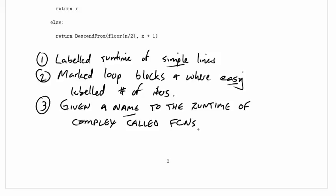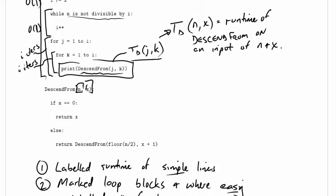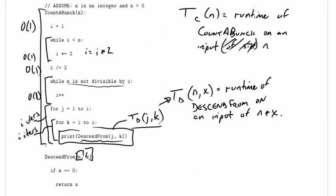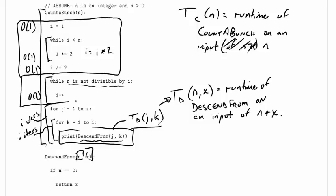And actually, in essence, if I can jump back up for just a moment, what it's done is it's broken countabunch into a few pieces. So we have this piece up here that we're going to have to analyze, which is all about the first loop. We have this piece here, the second loop, and we have this piece here, the third loop.